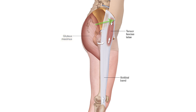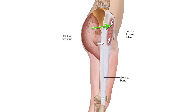The TFL attaches proximally onto the anterior superior iliac spine, the ASIS, and then a bit along the anterior iliac crest. From there it runs distally and a bit laterally and posteriorly to attach into the iliotibial band approximately one-quarter of the way down the thigh.